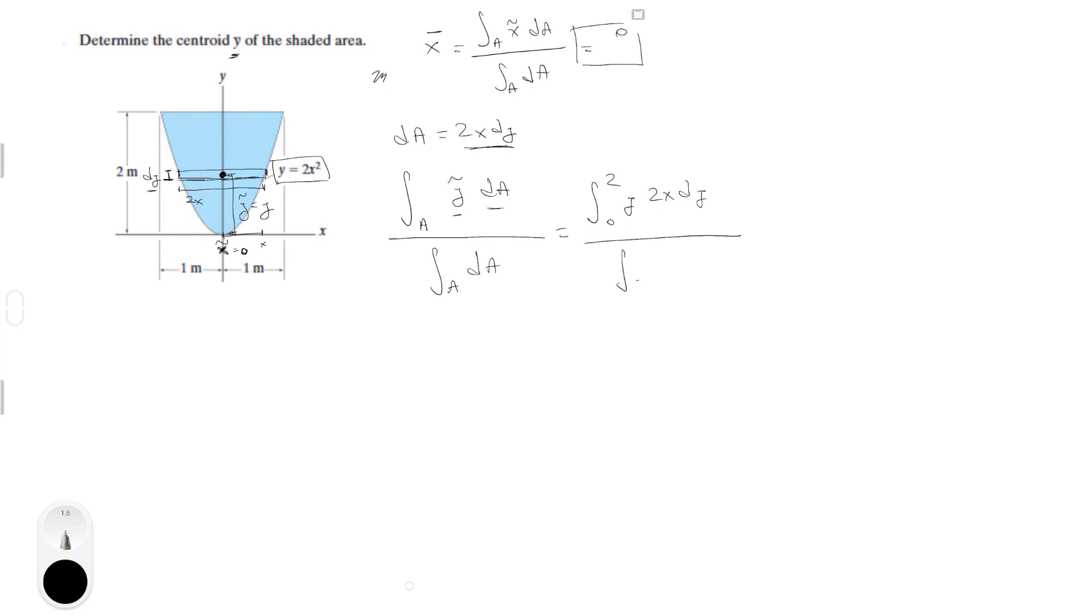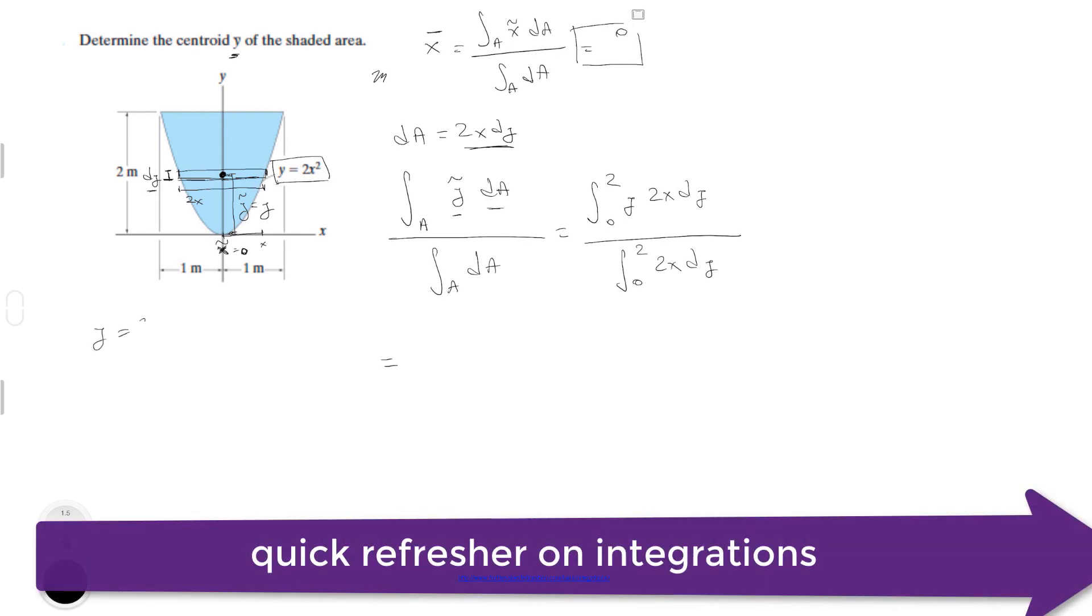We go here. Now we're basically going to replace x. So we know that y is equal to 2x squared. So let's solve for x and we get that x is the square root of y over 2. And you're just going to plug that in to the equation and replace it for x.